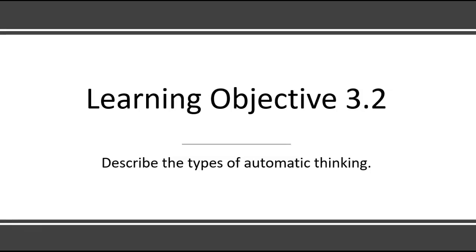In this video, I'll be covering Learning Objective 3.2: Describe the Types of Automatic Thinking for PSY 235 Social Psychology.